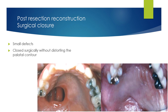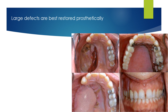Regarding post-resection reconstruction and surgical closure: for small defects, it can be closed surgically without distorting the palatal contour. Large defects are best restored prosthetically. However, some surgeons prefer to close defects surgically with vascularized free grafts. This type of surgical reconstruction will cause mucus accumulation and bad odor. In addition, the retention of the removable appliance will be compromised.